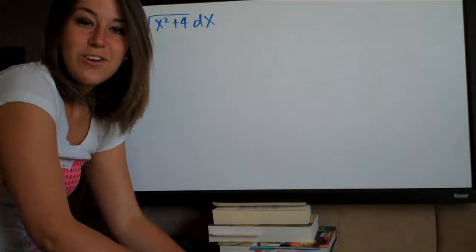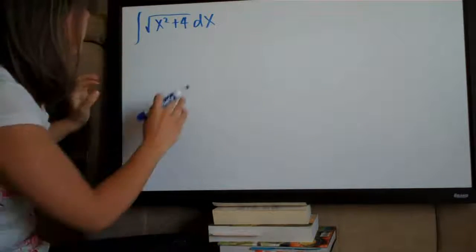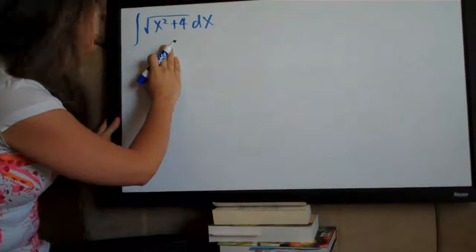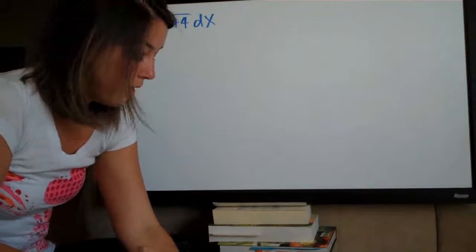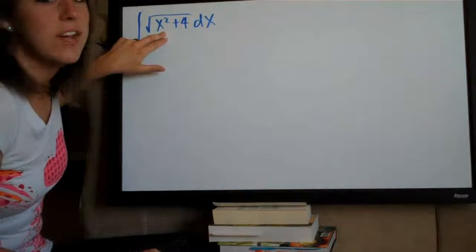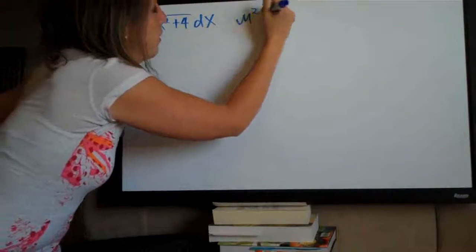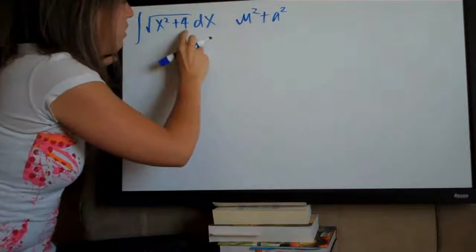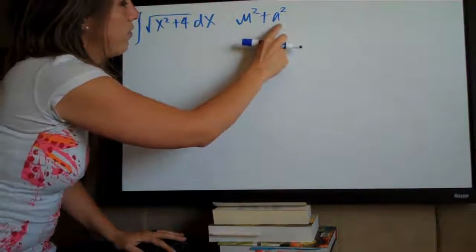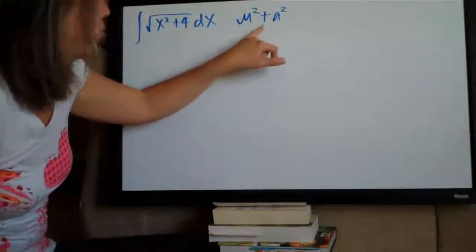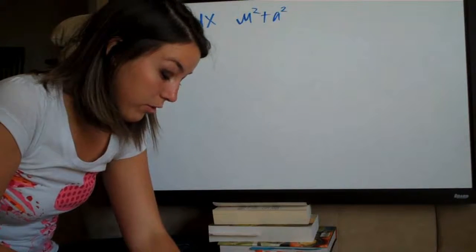Hi everyone, welcome back to IntegralCout.com. We're going to be doing another trigonometric substitution problem today. This one is the integral of the square root of x squared plus 4 dx. We know that this is a trigonometric substitution problem because we can identify the identity u squared plus a squared, where a is a constant and a equals 2, so 2 squared equals 4. This is one of our three basic trigonometric identities.